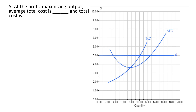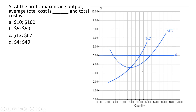Question 5: at the profit-maximizing output, average total cost is blank and total cost is blank. At 10 units of output, we walk up vertically to the average total cost curve and find $4. So average total cost at the profit-maximizing output is $4. Total cost: producing 10 units at $4 per unit, 4 times 10 gives us total cost of $40. Answer choice D.